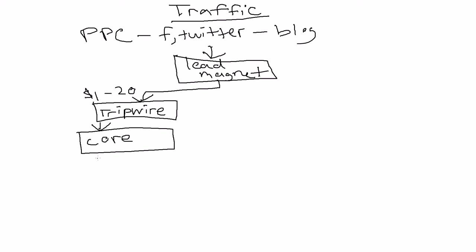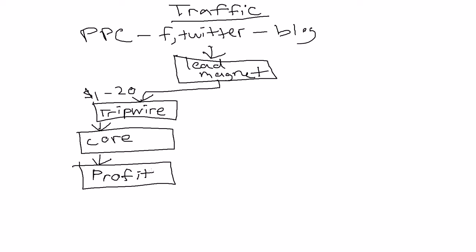If they say yes to the core product, last but not least you have a profit maximizer — your most expensive product. It can be anywhere from a hundred dollars one-time to thousands of dollars depending on your market. A select number of your customers will get this product because they're all-in; they want to go all the way and get all your information and see everything you have to offer — your best training and everything.